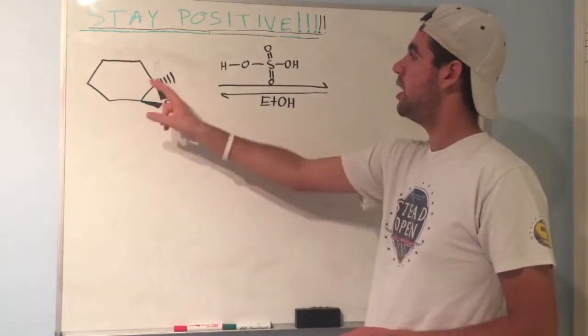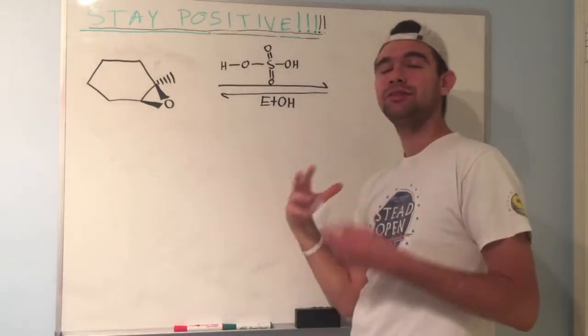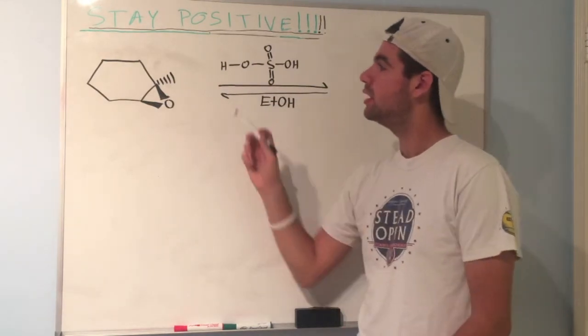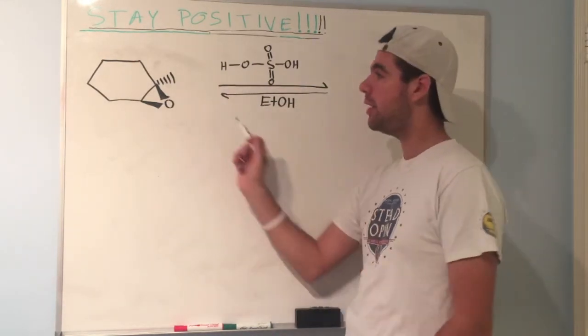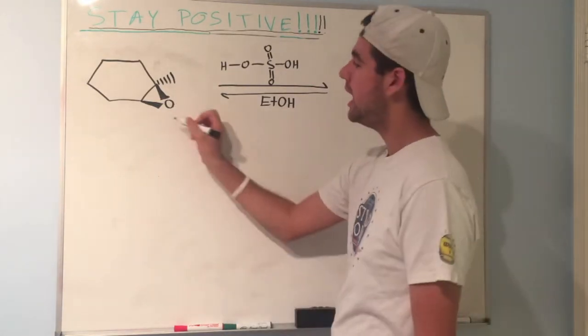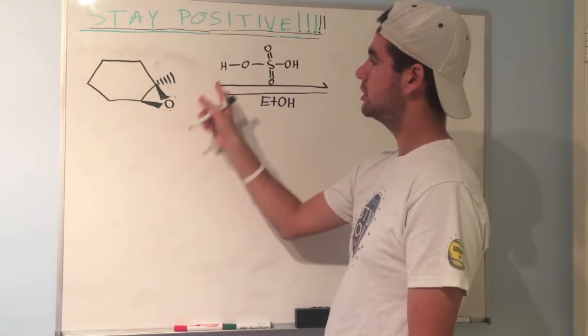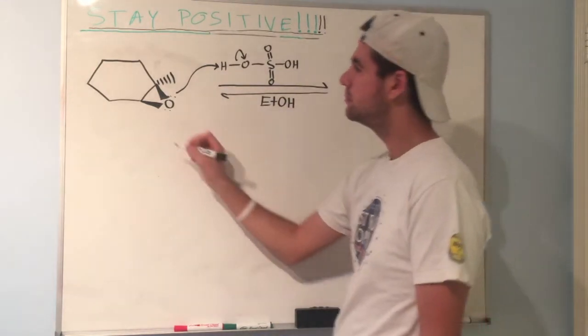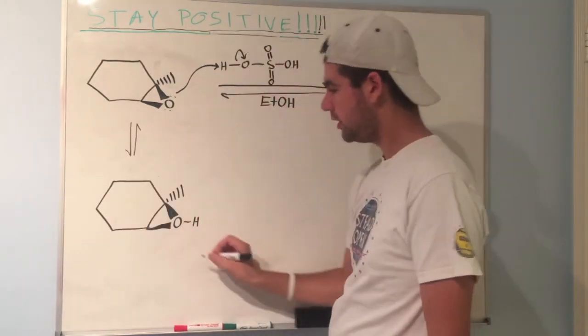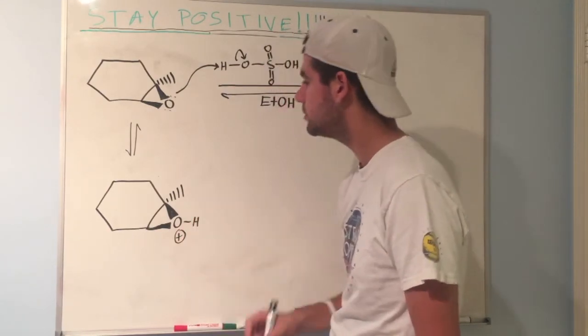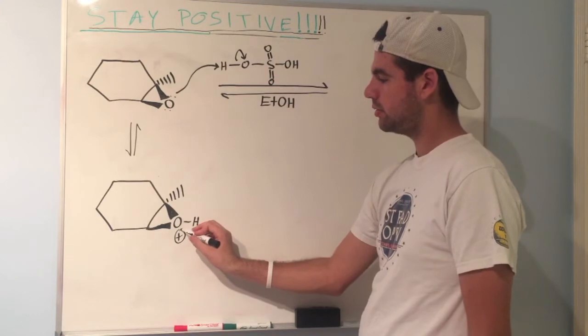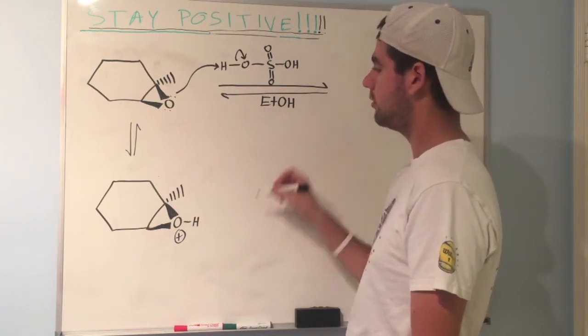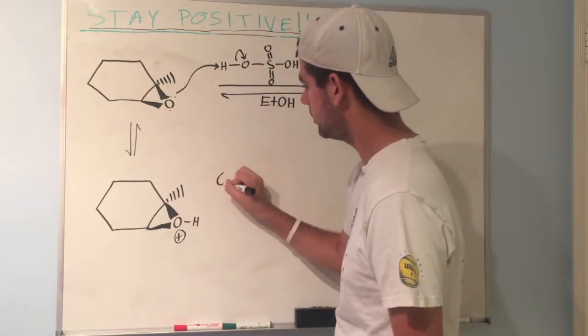For this next problem, we see an epoxide, some acid - sulfuric acid - and a weak nucleophile. So what should be blinking is acid-catalyzed ring opening. Look for the more substituted carbon, but before we do that, we need to protonate the oxygen. That's what happens first in any acid-catalyzed ring opening. Oxygen grabs that acidic hydrogen, sends those electrons over to oxygen, and now we're here with a protonated epoxide with a plus one formal charge.